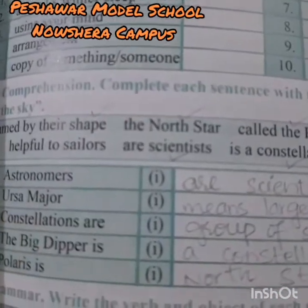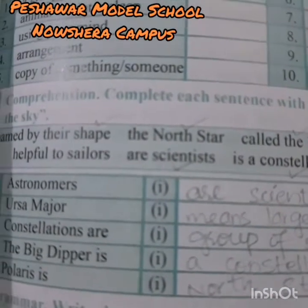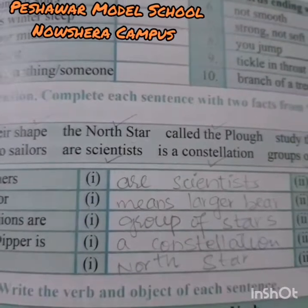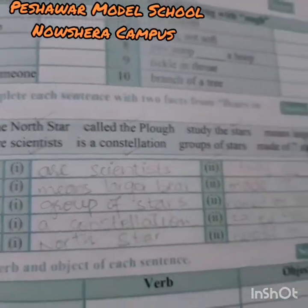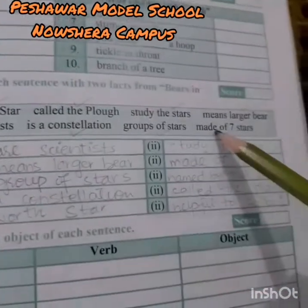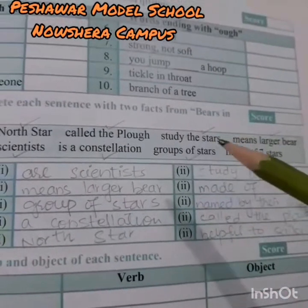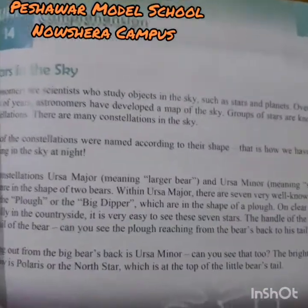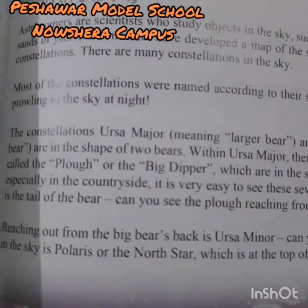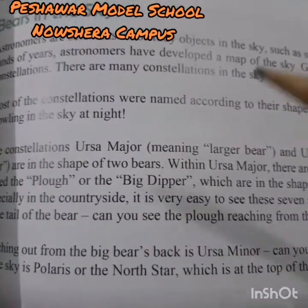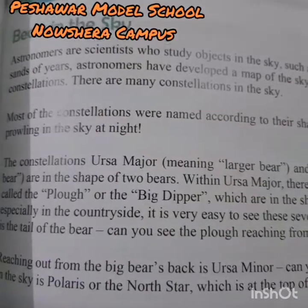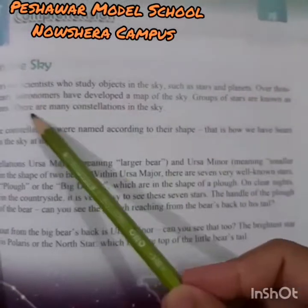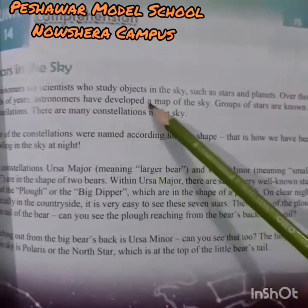Now, what is next — Ursa Major. We will find two options for it. It means 'larger bear' — that one is done — and 'made of seven stars' — that one is done. Let's go back to page 74 and check whether it is correct. Let's read about constellation, because Ursa Major is related to constellation.